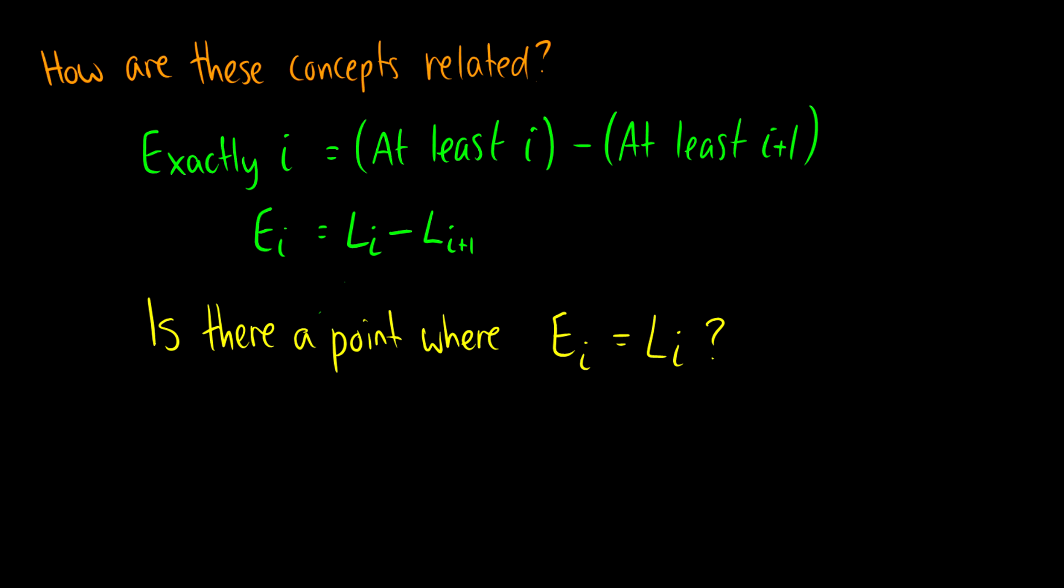So when we say exactly I conditions are being met, what we're really saying is that we have at least I conditions being met and we subtract at least I plus one conditions. So in sort of a diagram here, if we have I here and we have I plus one, if we want at least I, then we have everything above here. But if we want at least I plus one, then what we have here and we subtract the two is just this spot remaining in between, which happens to be all the scenarios where only I conditions are being met. So this is how we get exactly I. So hopefully that diagram helps. It should be kind of intuitive that exactly is at least I minus at least I plus one.